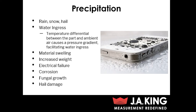Some other things to look for in precipitation testing are material swelling and increased weight, which are both results of your part actually taking on moisture. Also electrical failure, corrosion of the part, and fungal growth. On the more mechanical side is hail damage, and those tests are usually performed on roofing materials, siding, and automotive exterior components.